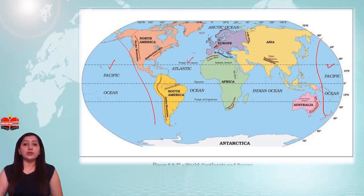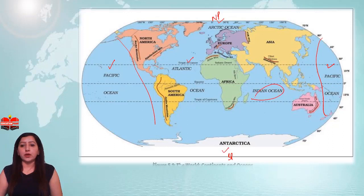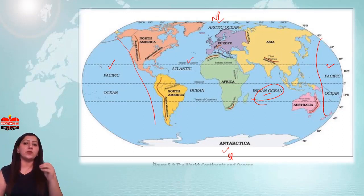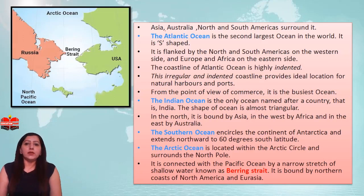The Atlantic Ocean is the second largest ocean in the world. The Arctic Ocean is located approximately around the North Pole. Antarctica is at the South Pole. The Indian Ocean is the only ocean named after a country, which is India. If we talk about the Pacific Ocean, it is surrounded by Asia, Australia, and North and South America.